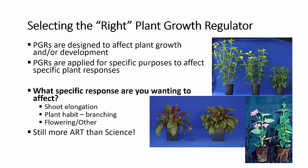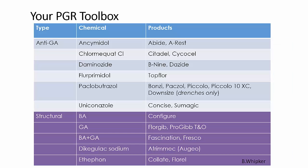Using plant growth regulators is still a good bit more art than science. But first of all, you have a very large toolbox. The top ones in blue are what we call the growth retardants — these are the anti-GA products and they inhibit growth. The lower ones are what we call our structural plant growth regulators; they affect the other processes that we're interested in for plant production.